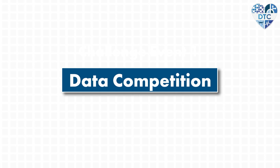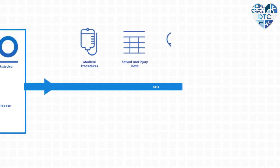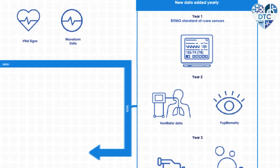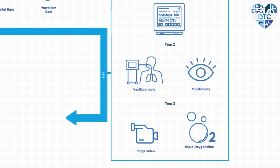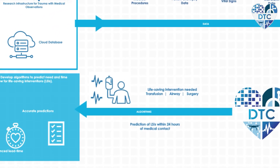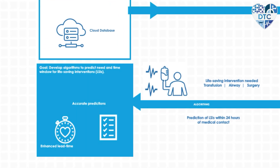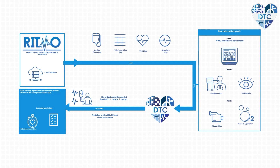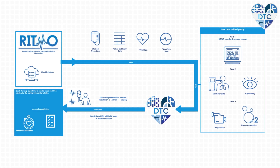The data competition is using DARPA-provided de-identified multimodal physiological data from trauma patients in diverse settings and cohorts, provided by the DARPA Research Infrastructure for Trauma with Medical Observations (RITMO) program. Teams are developing algorithms that detect signatures in these data streams to provide decision support appropriate for austere and complex pre-hospital settings, with particular interest in early signatures indicating a need for life-saving interventions against conditions such as hemorrhage and airway injuries.